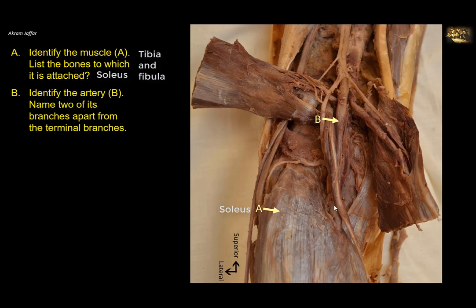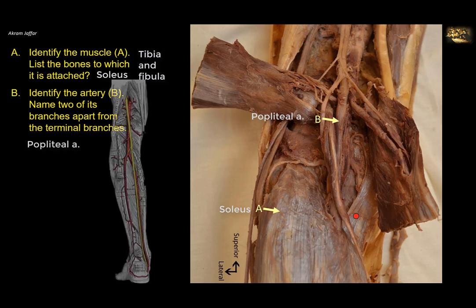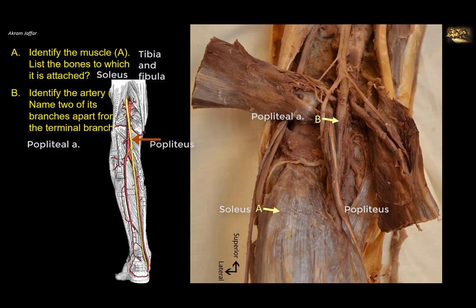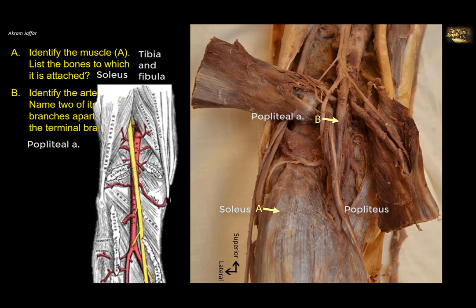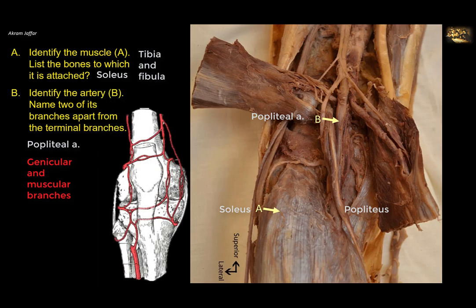Identify artery B. B is the popliteal artery, the continuation of the femoral artery. It remains the popliteal artery until the distal border of the popliteus muscle, where it divides into anterior and posterior tibial arteries. Apart from its terminal branches, it supplies unnamed muscular branches and genicular branches — upper medial, upper lateral, lower medial, lower lateral, and a middle genicular artery. These genicular arteries participate in the blood supply of the joint and form an arterial anastomosis around it.